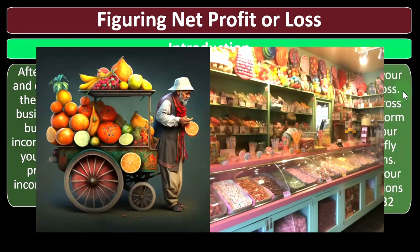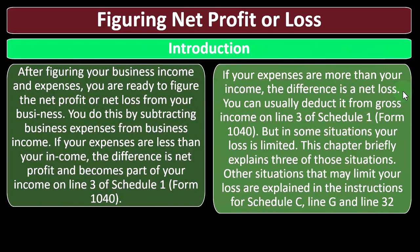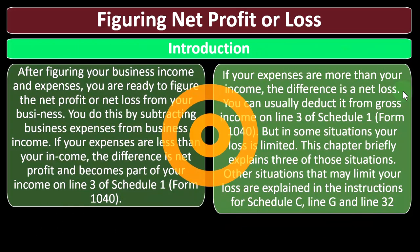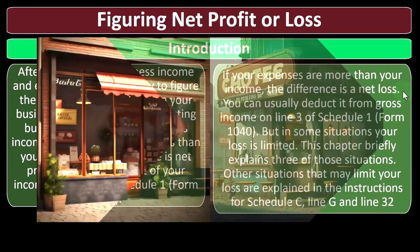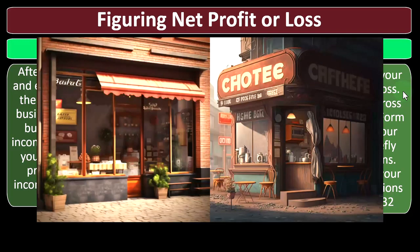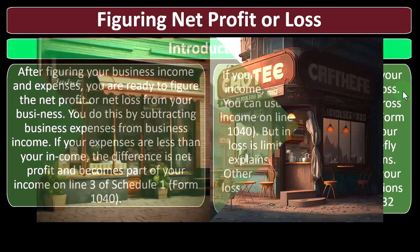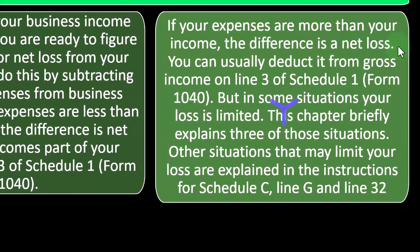If it's not revenue-generating activity, you might have a hobby situation rather than a business income situation. But if you are legitimately trying to build a business, it's quite common in the first couple of years to have a loss. You don't want to be overly worried about the loss, as long as you can prove, in the event of an audit, that you are actively seeking profit. You can usually deduct the loss from gross income on line three of Schedule 1, Form 1040, but in some situations your loss is limited.